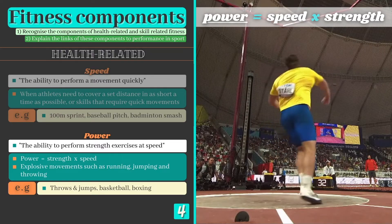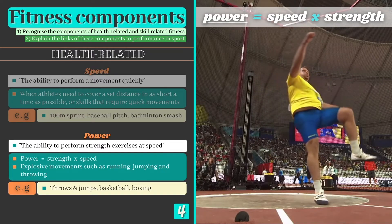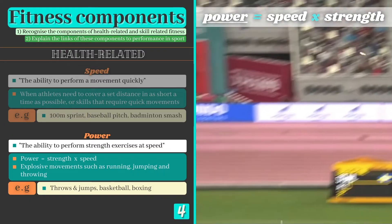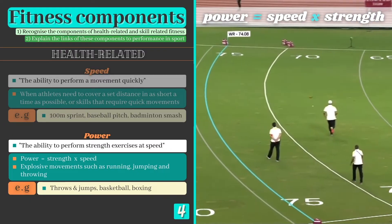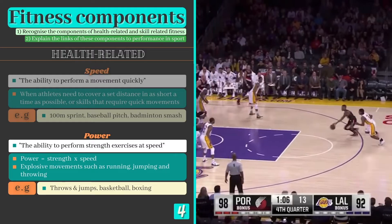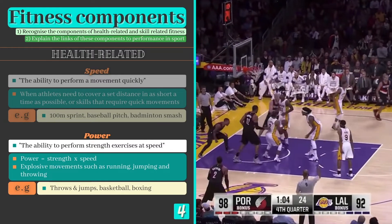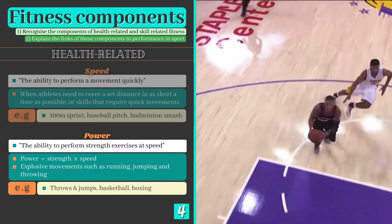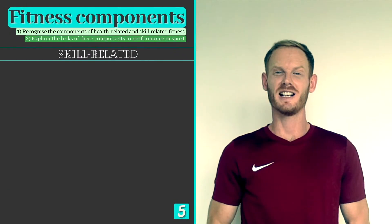Our final health related component is power, or the ability to perform strength exercises at speed. Discus throwers require strength to move the resistance of the discus but must do so quickly or explosively if a good distance is to be achieved. Power is also essential for explosive actions such as dunking in basketball or throwing a punch in boxing.